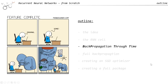We now want to understand how backpropagation works in our RNN cell. Because we use the RNN cell recursively for every time step, it will be a bit different from what you probably know concerning backpropagation in other cases. I want to explain the mathematical background first, and then we want to translate the equations into code in the second part of this chapter.